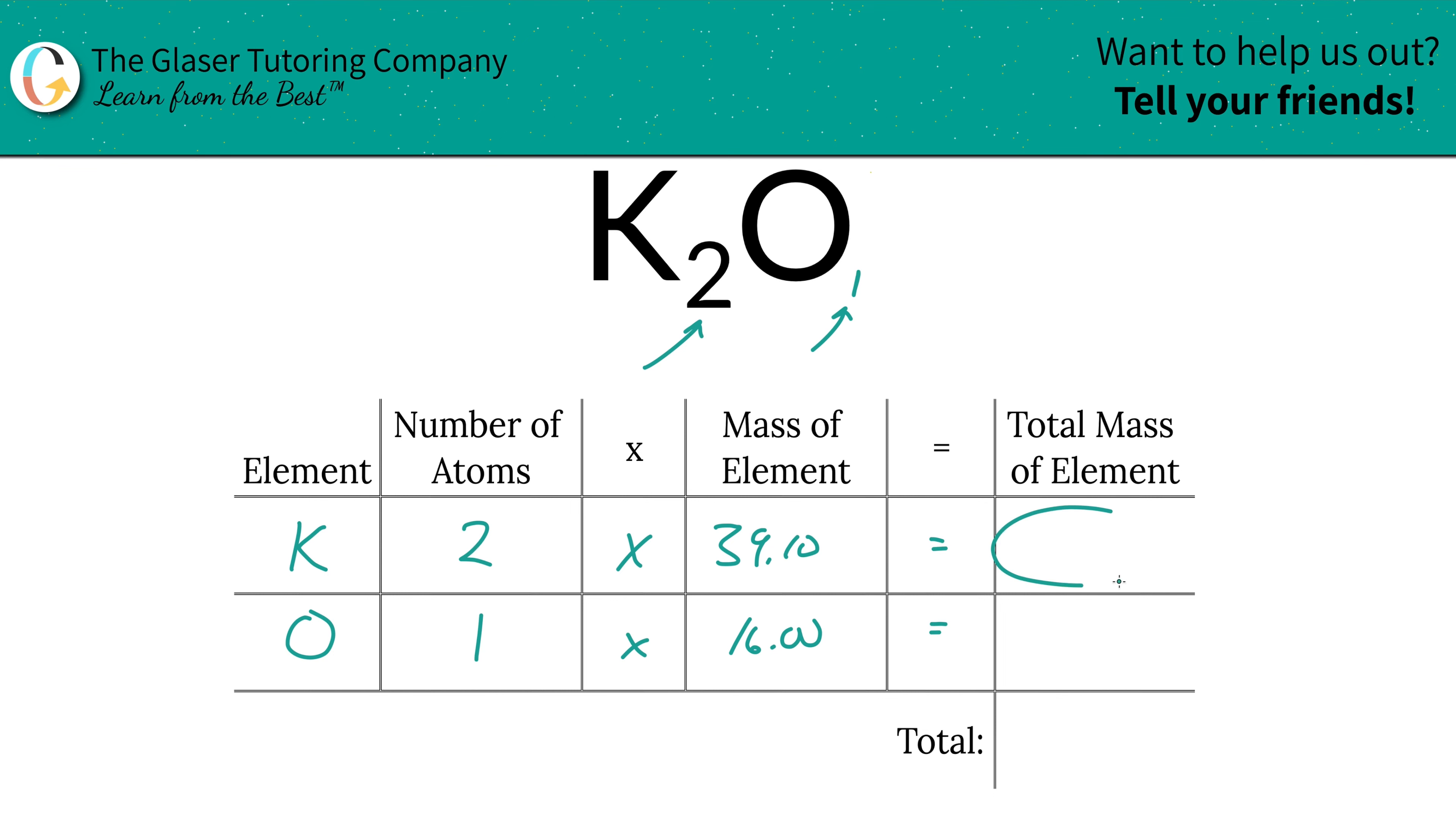Next, we're going to find the total mass of each element of the compound by simply multiplying this row across. So the total mass of potassium is going to be 78.20. And the total mass of oxygen is just going to be 16.